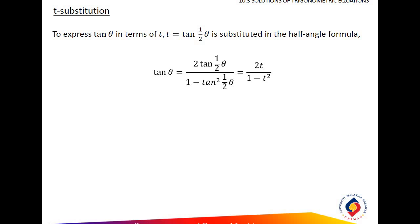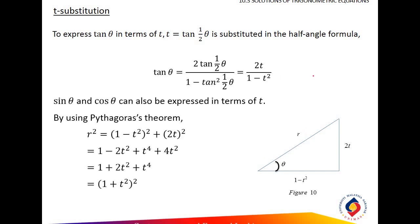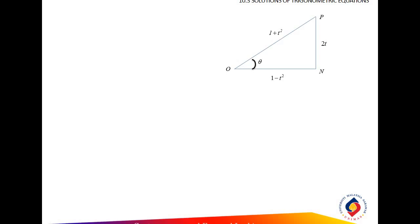So with 3 substitutions, you have to remember that tangent theta is defined by the half-angle. In the half-angle, you can change the half-angle to T. So in the example we get 3T and 1 minus T squared. You can use the Pythagorean theorem to find the hypotenuse, so the hypotenuse is 1 plus T squared. That is how you get tan theta and 2 theta.